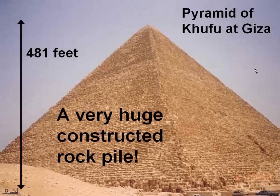First of all, let's take a look at a pyramid. We're going to be leading up to talking about the arch, but this is just an illustration of not a very good way to build a structure that would be big and would house a lot of different things. This in fact is a tomb and it's a very huge constructed rock pile — you can see almost 500 feet high.